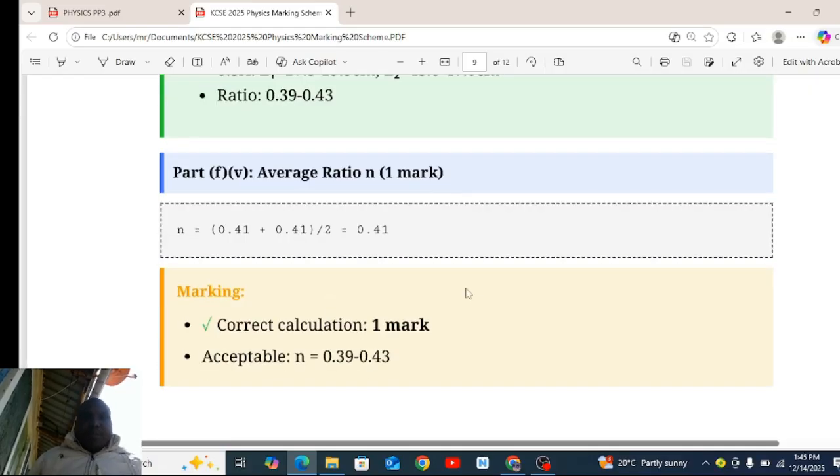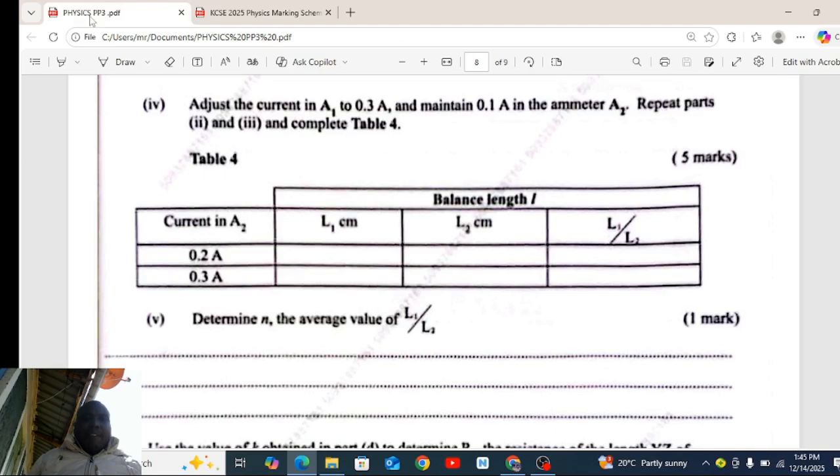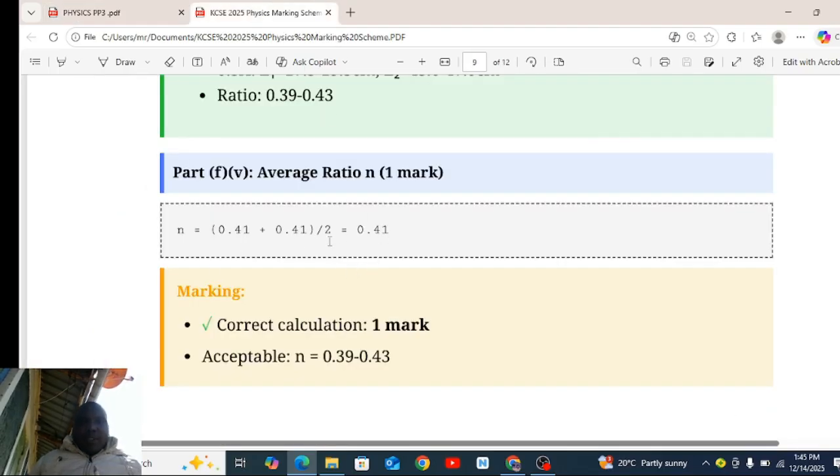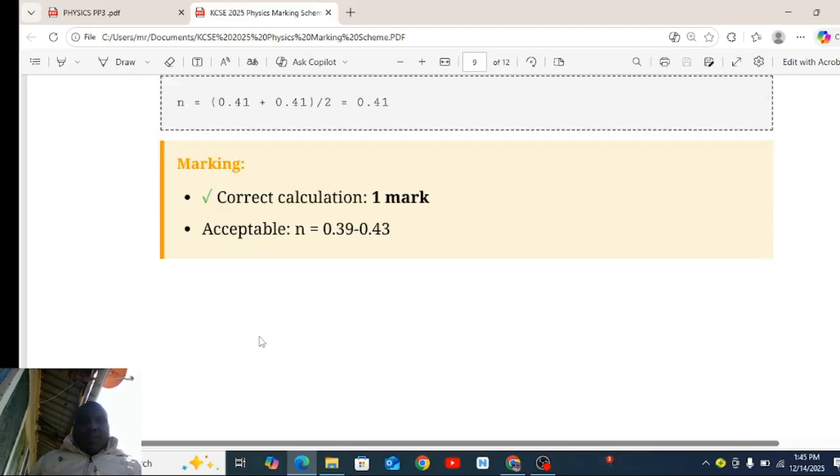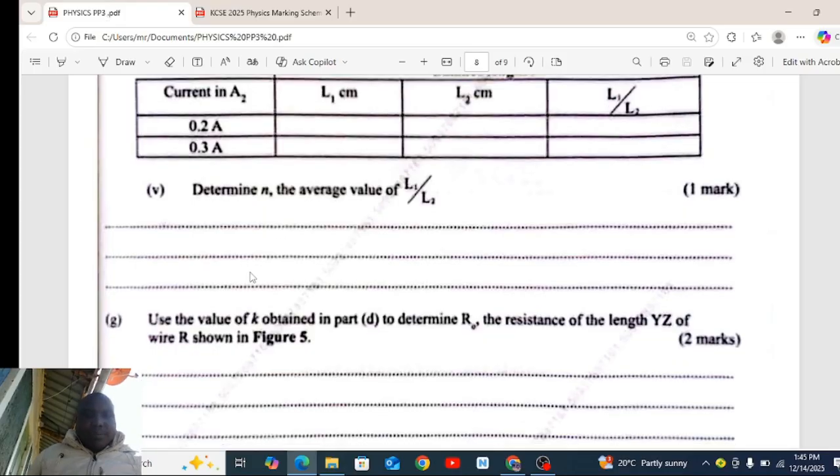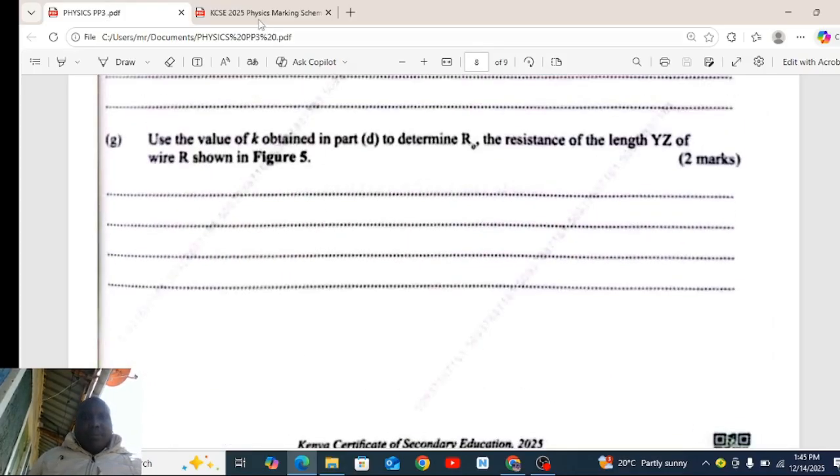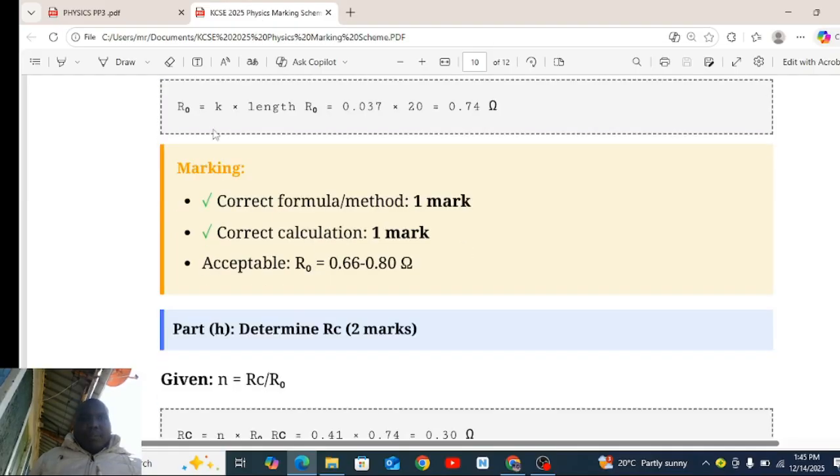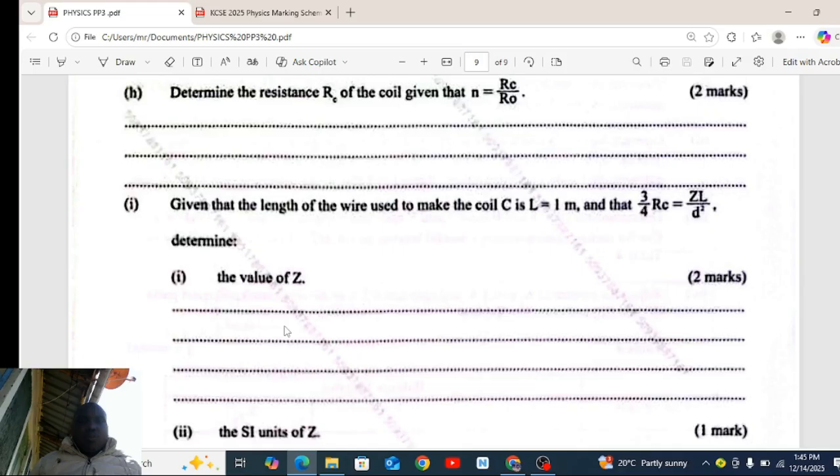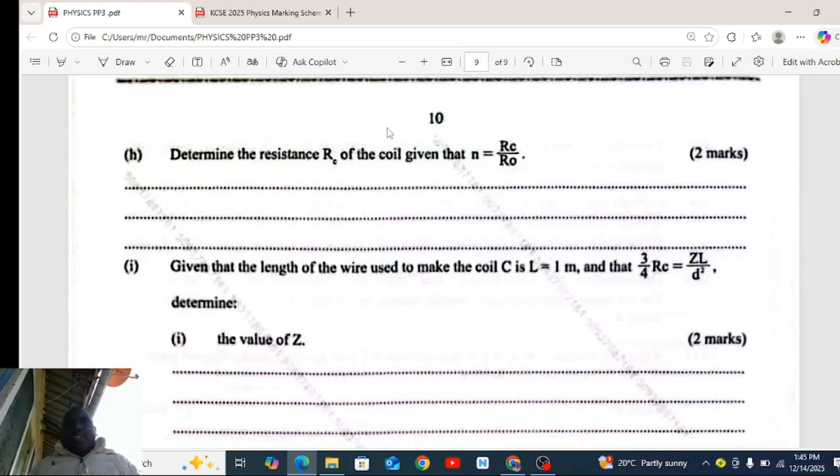You can as well score if you are between these ranges. Determine N, the average L1 of L2. N is equal this plus that, divided by 2. Determine Rθ. K plus length, Rd is equal that. Determine the resistance R of the coil given that N is equal to Rc over Rho.